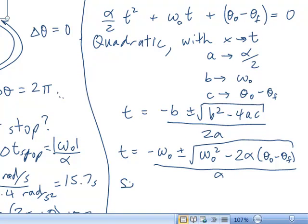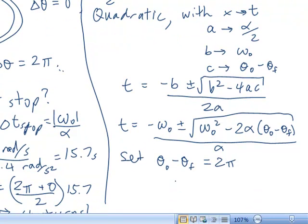I was just saying we set theta sub zero minus theta f. Your delta theta is negative 2pi, so this is actually a positive 2pi, because it's actually initial minus final. So, this is all the way around.